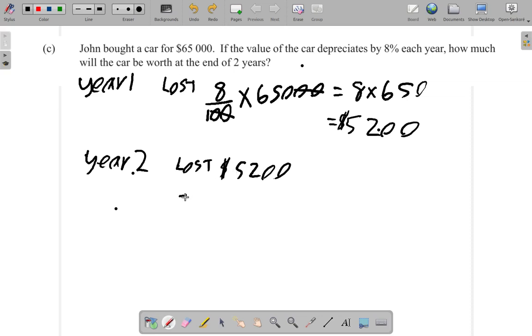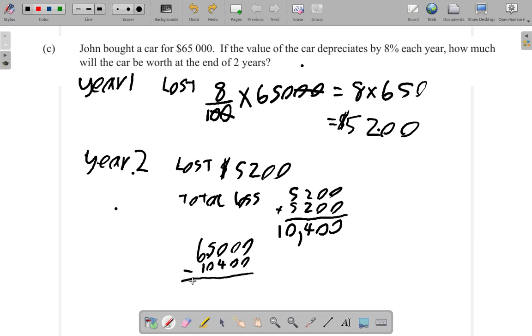Now the total loss is 5,200 plus 5,200. So you add them: 0 plus 0 is 0, 0 plus 0 is 0, 2 plus 2 is 4, 5 and 5 is 10. So you have a total loss of 10,400. So the 65,000 minus 10,400 gives you 54,600.